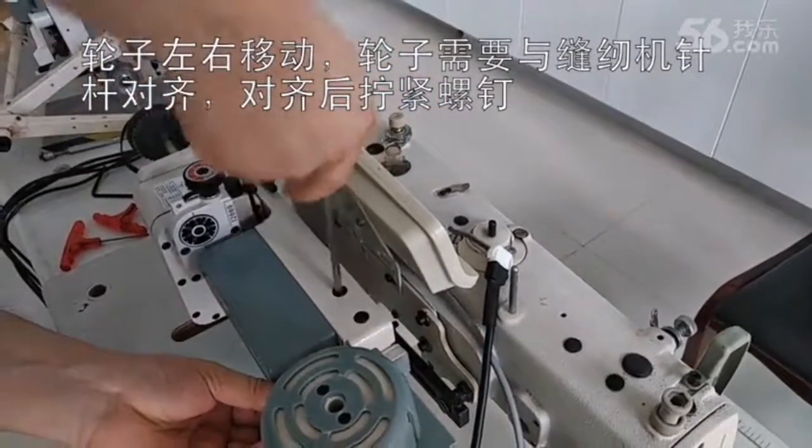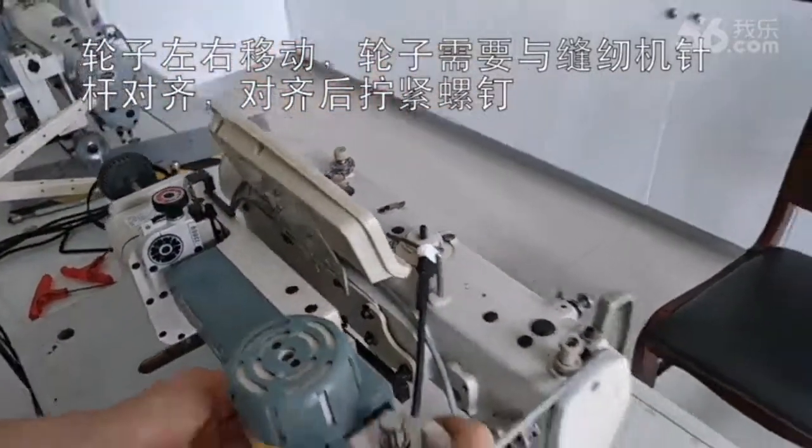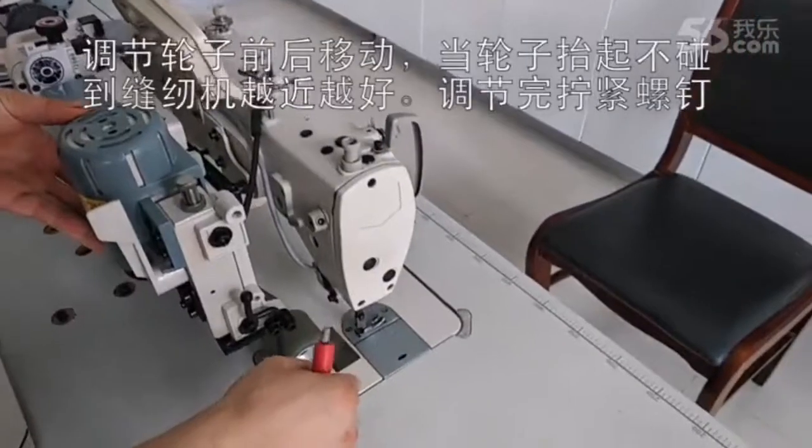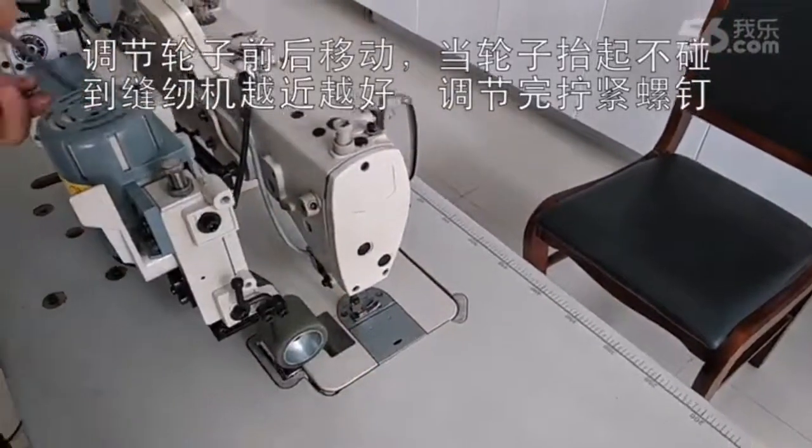The puller is just behind the needle bar. You can move the puller to left or right hand to do the adjustment, then fix the screw.